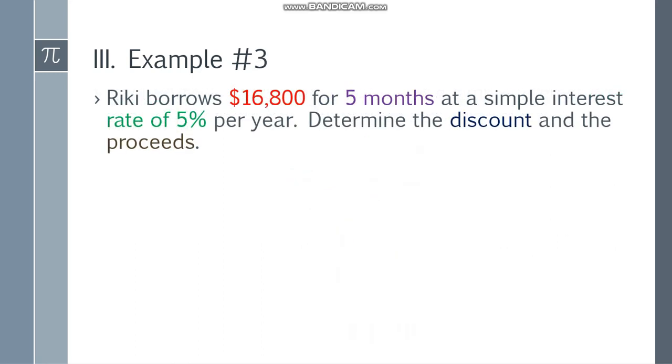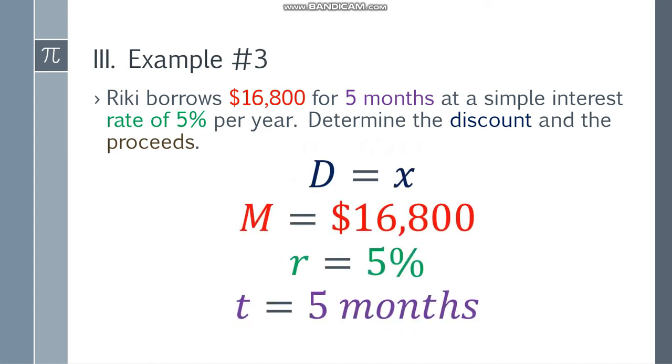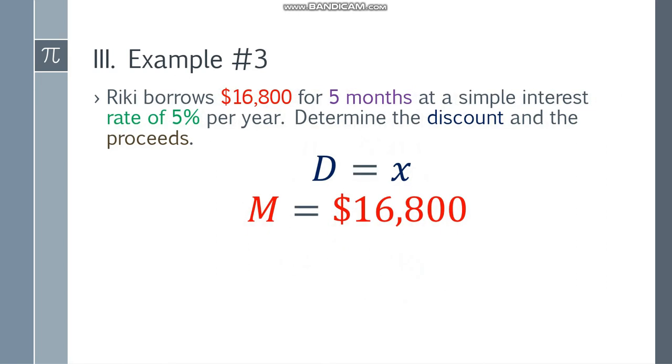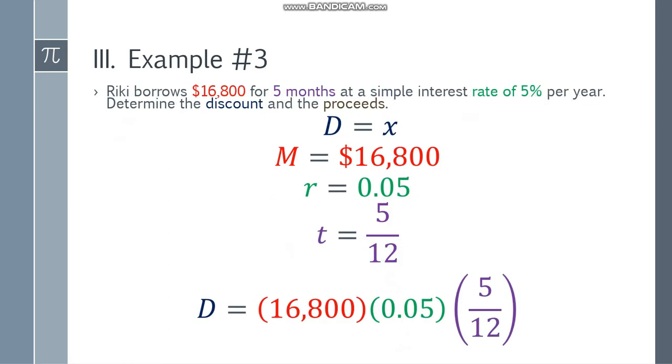Example number three. Ricky borrows $16,800 for five months at a simple interest rate of 5% per year. Determine the discount and the proceeds. From the given, D equals X, maturity value is $16,800, R equals 5%, and T equals five months. Change the rate: 5% to decimal form is 0.05. The time will be 5 over 12 because there are 12 months in a year.